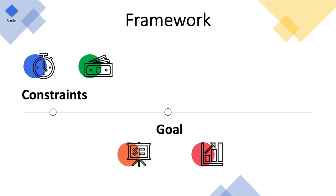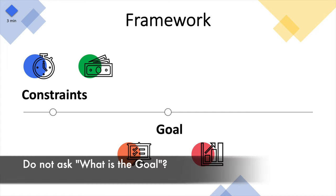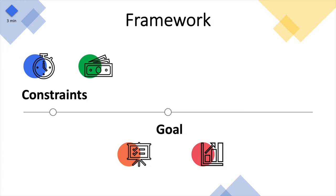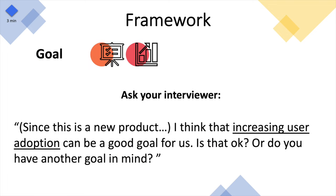Number two: goal. If the interviewer did not tell you the goal right away, find out what it is — it will be central to the entire framework. However, don't simply ask 'what is the goal of developing this product?' That's a lazy question and the interviewer might ask you back. Instead, think of how the product relates to the company. For example, if asked to design a vending machine for Google, you might say: 'Google doesn't design vending machines, so we're entering a new market. Increasing user adoption seems like a good goal — is that okay, or do you have another goal in mind?' As long as the metrics are related to your constraints and product, pick one and confirm.